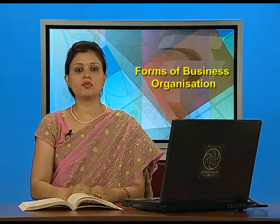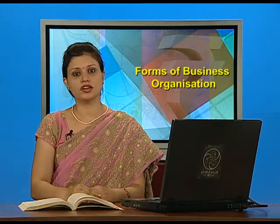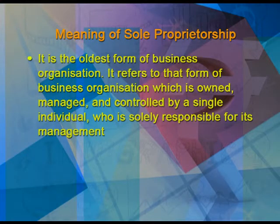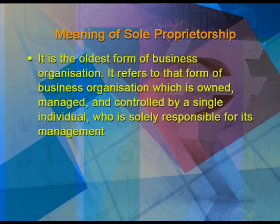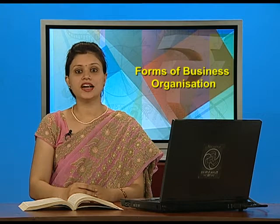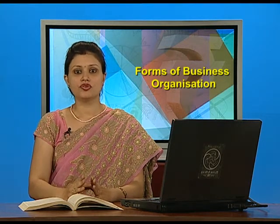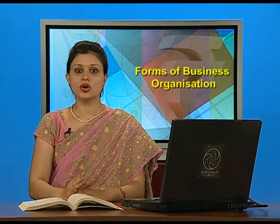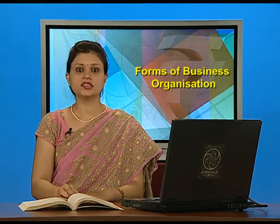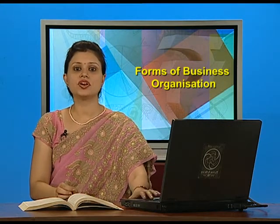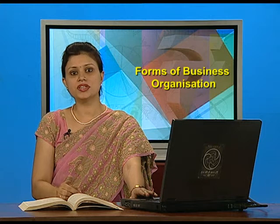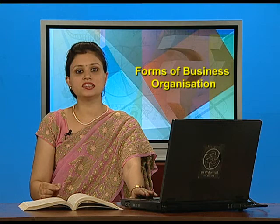Today we will discuss the first form of business organization, that is sole proprietorship. Sole proprietorship is the oldest form of business organization. It refers to that form of organization which is owned, managed, and controlled by a single individual, who is solely responsible for its management. This form of organization is owned by a single person who is completely responsible for the profits as well as losses of the business. Whole profits belong to that person only, and whole loss will also be borne by the single person. Sole means only, and proprietorship means ownership — only a single person will own this business.